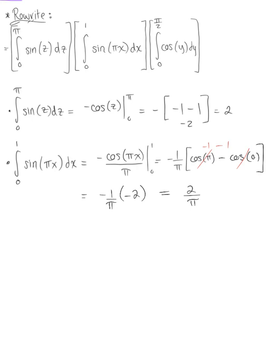Last but not least, we have the y integral: zero to pi over two of cosine of y dy. This integrates to sine of y, evaluated from zero to pi over two. Sine of pi over two is one, minus sine of zero is zero, so that leaves us with one.